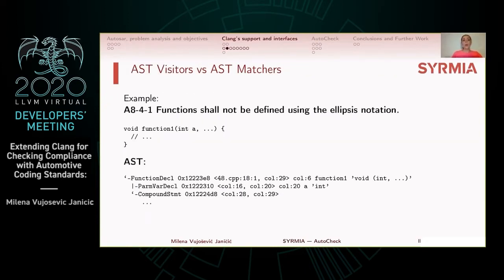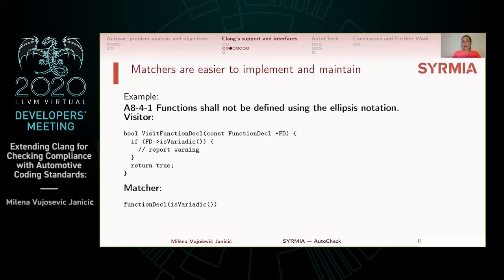Let us consider the following simple example — the AUTOSAR rule 'functions shall not be defined using the ellipsis notation.' This is a very simple rule that demonstrates the power of matchers. Here we have a short piece of code corresponding to a variadic function and part of its abstract syntax tree. For this simple example, both the visitor and the matcher are very simple. ClangTidy simplifies the additional code needed for writing matchers. Visitors correspond to a kind of imperative style of programming, while matchers correspond to a kind of declarative style of programming.